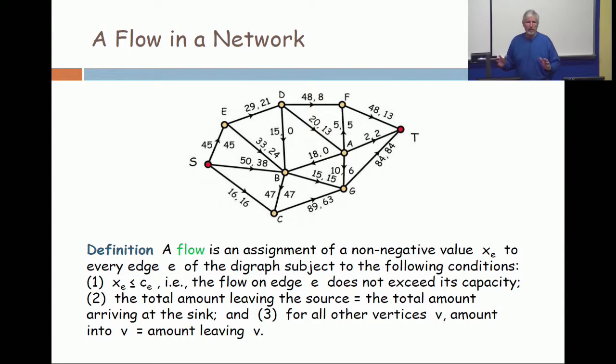Notice that the source and the sink are unique. There's nothing coming into the source. There's nothing leaving the sink. So there's no notion of amount in equals amount out. The amount in equals the amount out is the conservation law at all the vertices other than the source and sink.